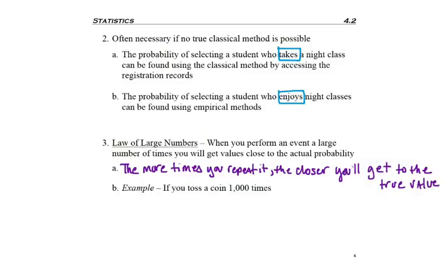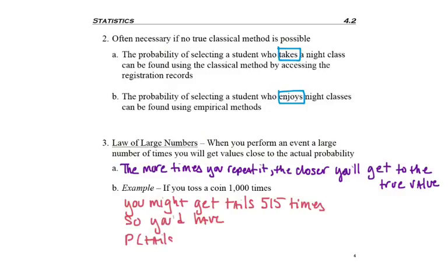In other words, the more times you repeat it, the closer you'll get to the true value. For example, if you toss a coin a thousand times, you would expect tails 500 times from the classical method, but you might actually get tails 515 times.